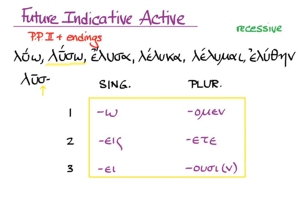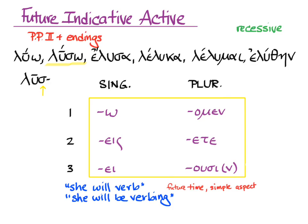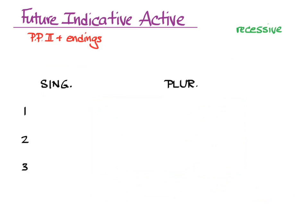The default translation for the future indicative active is 'she will verb' for future time and simple aspect, or 'she will be verbing' if you want to stress the continuous aspect. So let's put it together: Principle Part 2, endings, recessive accent, and a chart to put them in.